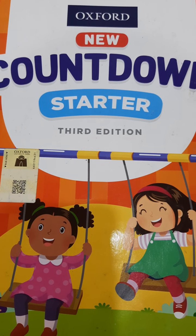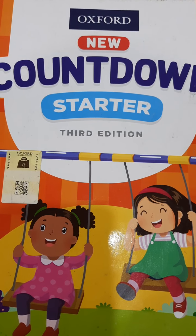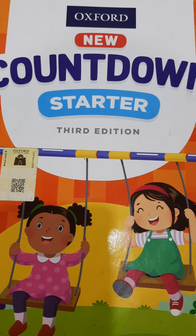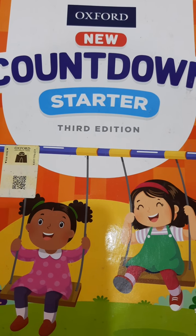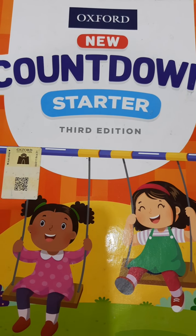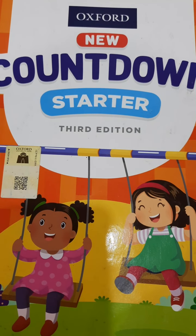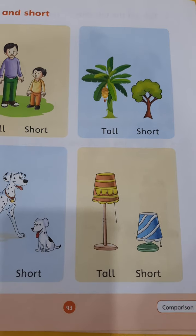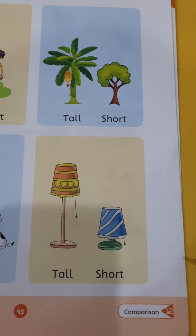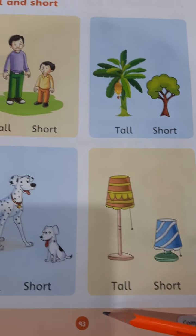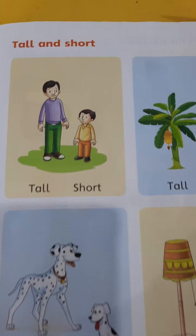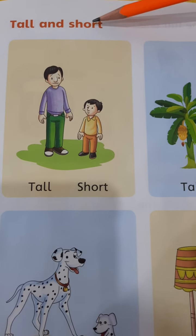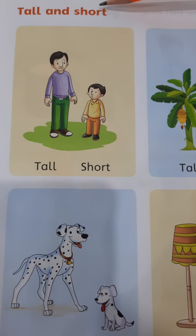Assalamualaikum students. I am from Bluebell School System, class in charge of playgroup. Today our subject is math. This is your countdown math book. Open your page number 93. Today our topic is tall and short.